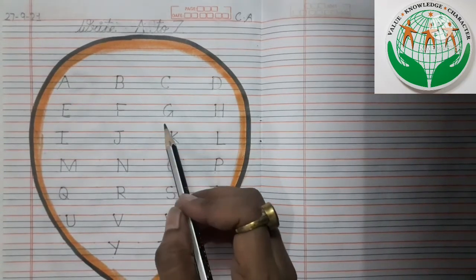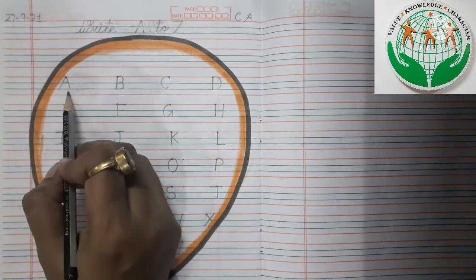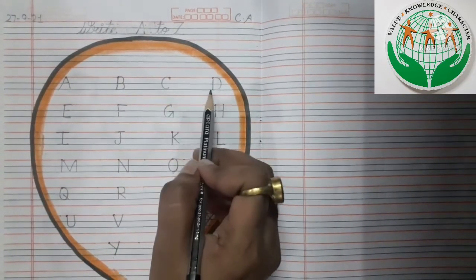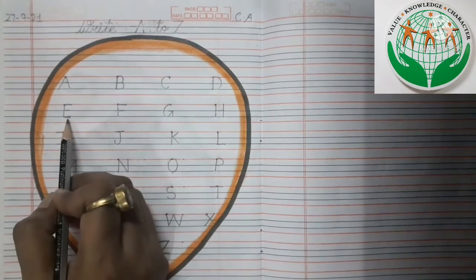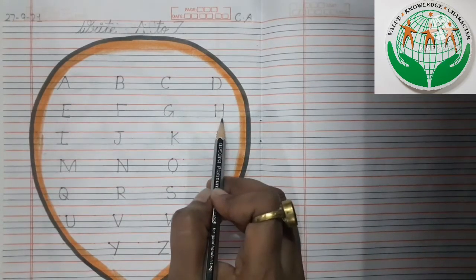So kids, these are our alphabets A to Z. Now kids, we will read again. A, B, C, D, E, F, G.